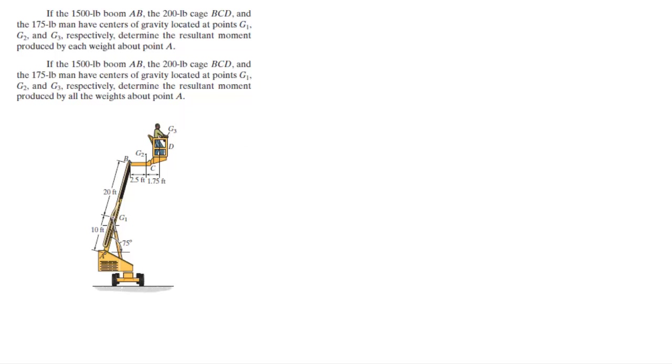So basically you have G1 right here, G2 is right here, and G3 is right here. Each one is creating a downward force with their weight - downward force here going straight down, downward force, and downward force.